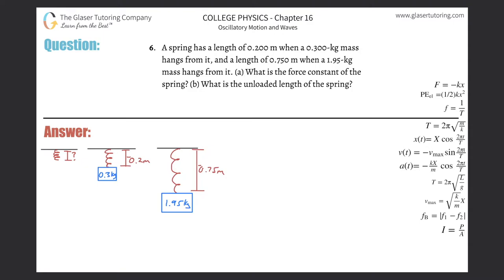Number six: a spring has a length of 0.2 meters when a 0.3 kilogram mass hangs from it, and a length of 0.75 meters when a 1.95 kilogram mass hangs from it. What is the force constant of the spring?